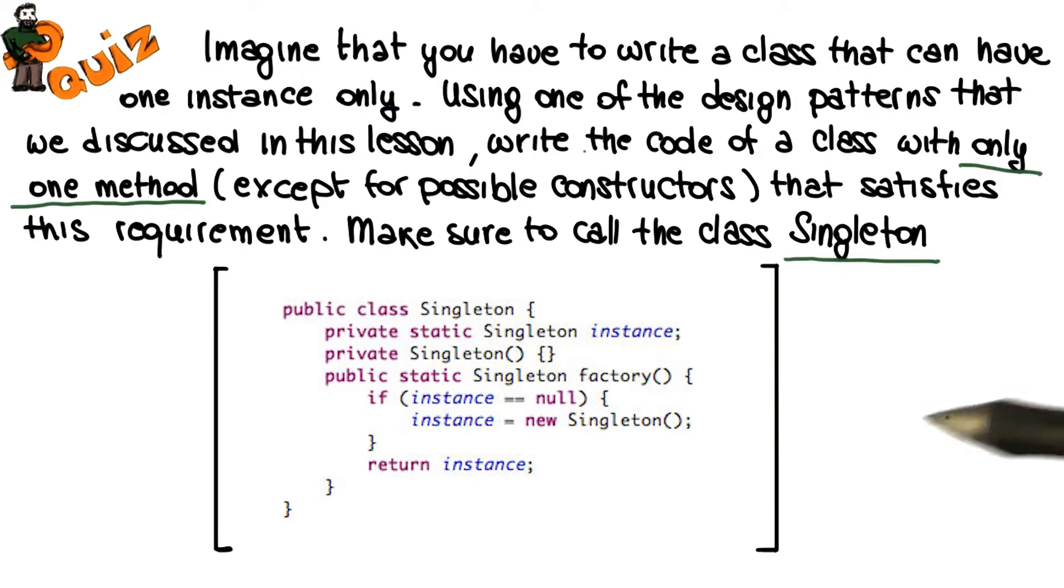The method will first check whether an instance of the class was already created. If it was created, it will just return that instance. Otherwise, it will create a new instance and assign it to the instance member variable, and then return the newly created instance.